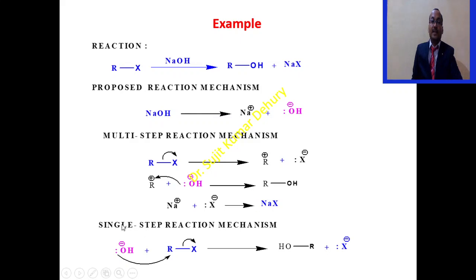In single-step reaction, the bond breaking and bond making is simultaneous or continuous process. Here you can see OH minus will attack R and this R-X bond will break on X, giving rise to ROH product plus X minus.